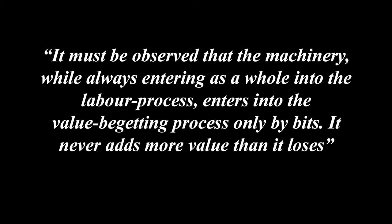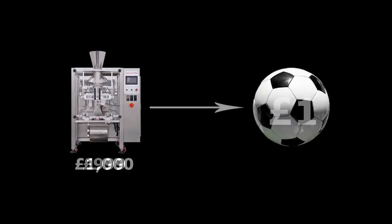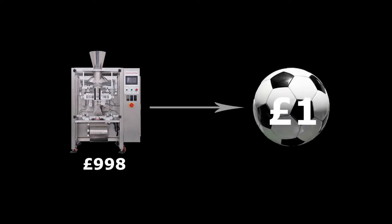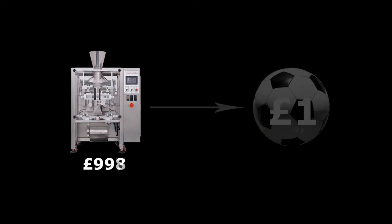It must be observed that machinery, while always entering as a whole into the labour process, enters into the value-begetting process only by bits — it never adds more value than it loses. Machinery is just sophisticated constant capital, and as Marx discussed in chapter 8, constant capital does not create any new value. It only transfers its existing value into the final product.